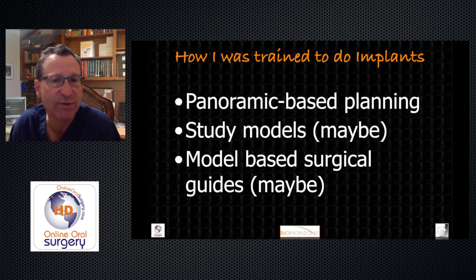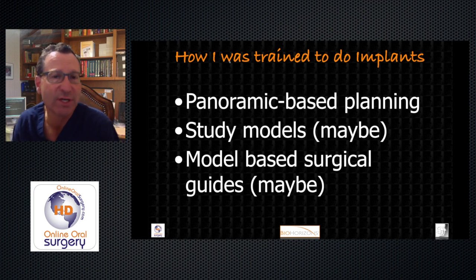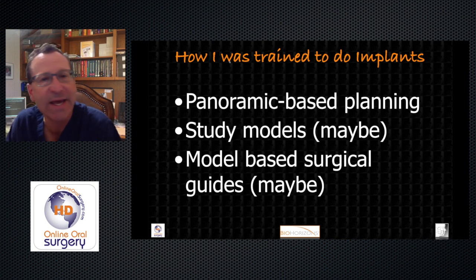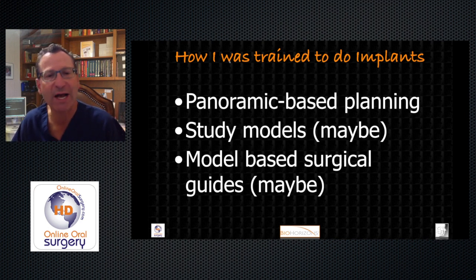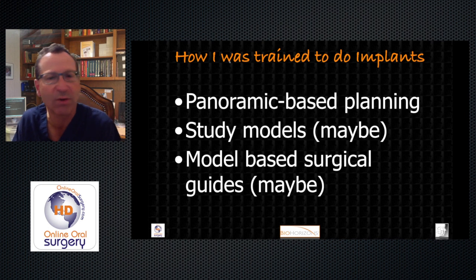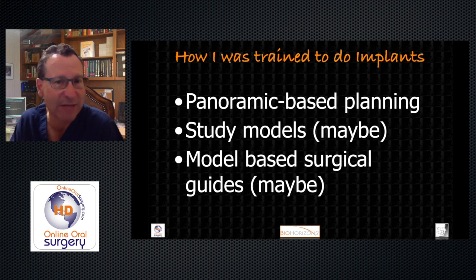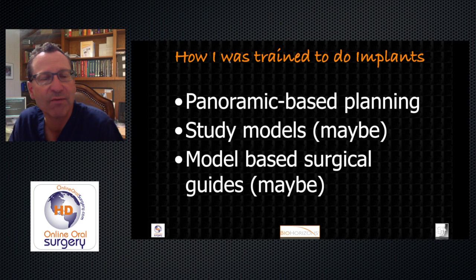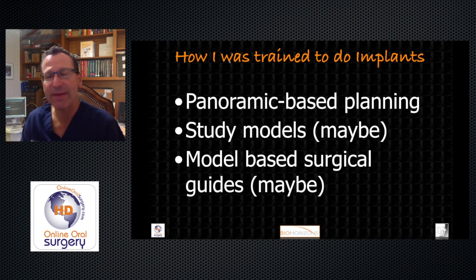I was trained the way most of us were trained about 20 years ago in residency. I used for imaging a panoramic radiograph and a 25% magnification ruler to measure how much height of bone we had to determine what length of implant to place. We determined the width essentially by the size of the tooth — a wide platform generally for a molar, a narrow diameter for a lower incisor or upper lateral incisor, and somewhere in the middle for premolars and canines.